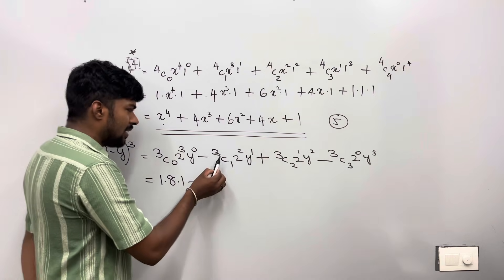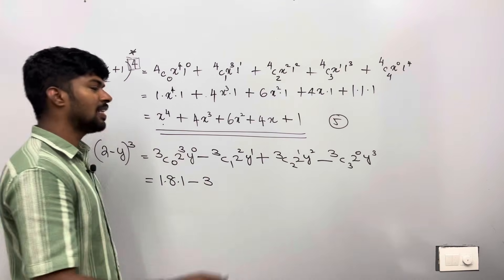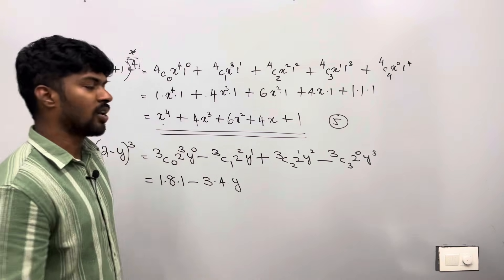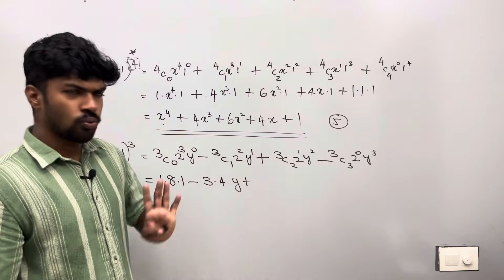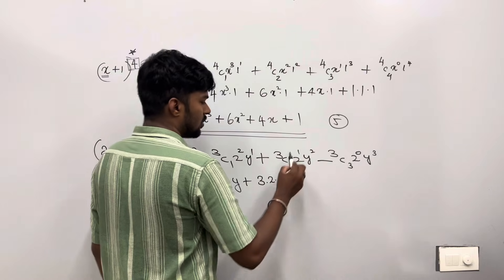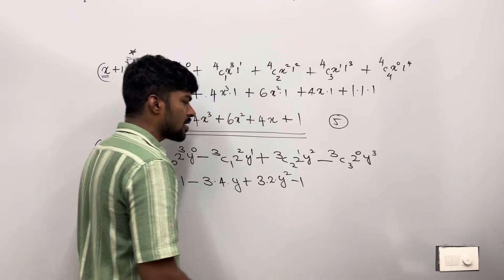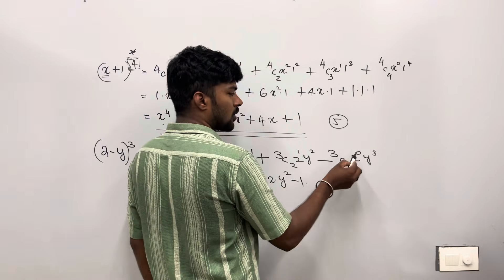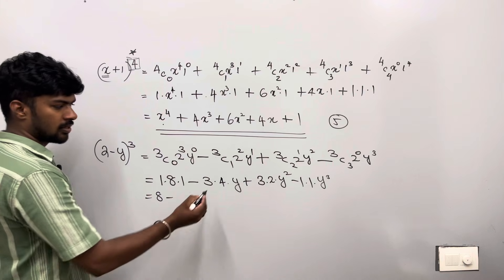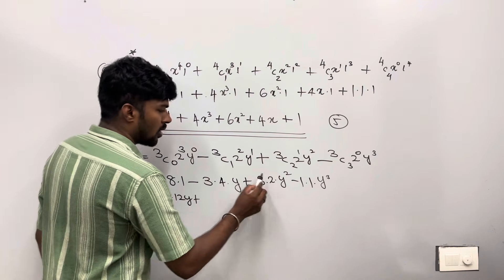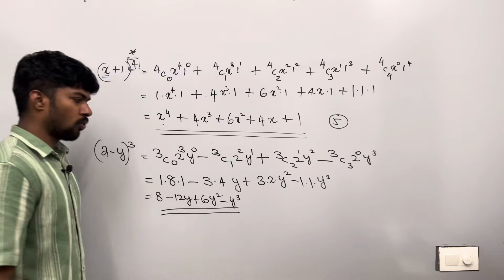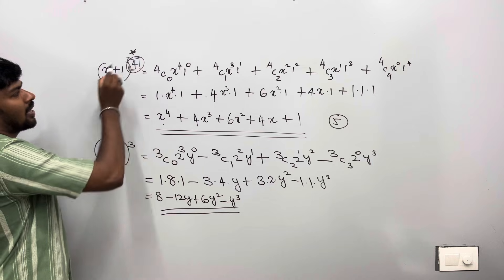Minus 3C1 — 3, square, 4, y raised to 1. Plus 3C2 — y, 3, y, y, square. Minus 3C3 — y, y, y, y. The answer is this. This is 4.5 power, then 5.5, 3.5 power, then 4.5. This is 4.5. Then we expand.